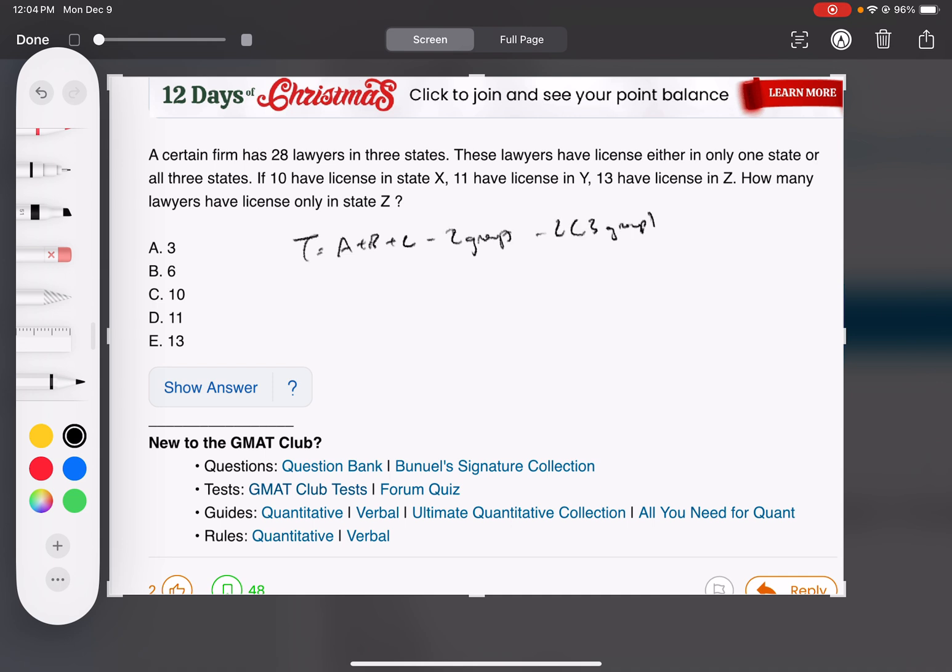So here it says they have a license in only one state or all three states, so I know there's nobody in exactly two groups and I don't really care about none. They're saying everybody's licensed somewhere, so the total is 28 is 10 plus